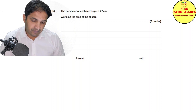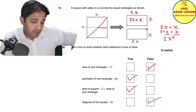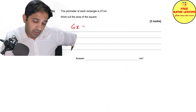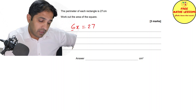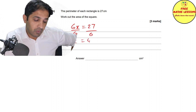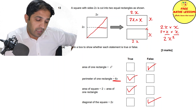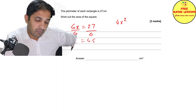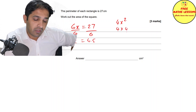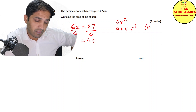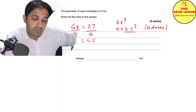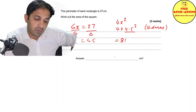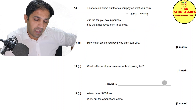Last part of question thirteen: perimeter of each rectangle is 27 cm. We said perimeter = 6x, so 6x = 27, giving x = 4.5 — that's one mark. Area of the square is 4x², so substitute x = 4.5: 4 × (4.5²). Using BIDMAS, square first: 4.5² = 20.25, then × 4 = 81 cm².